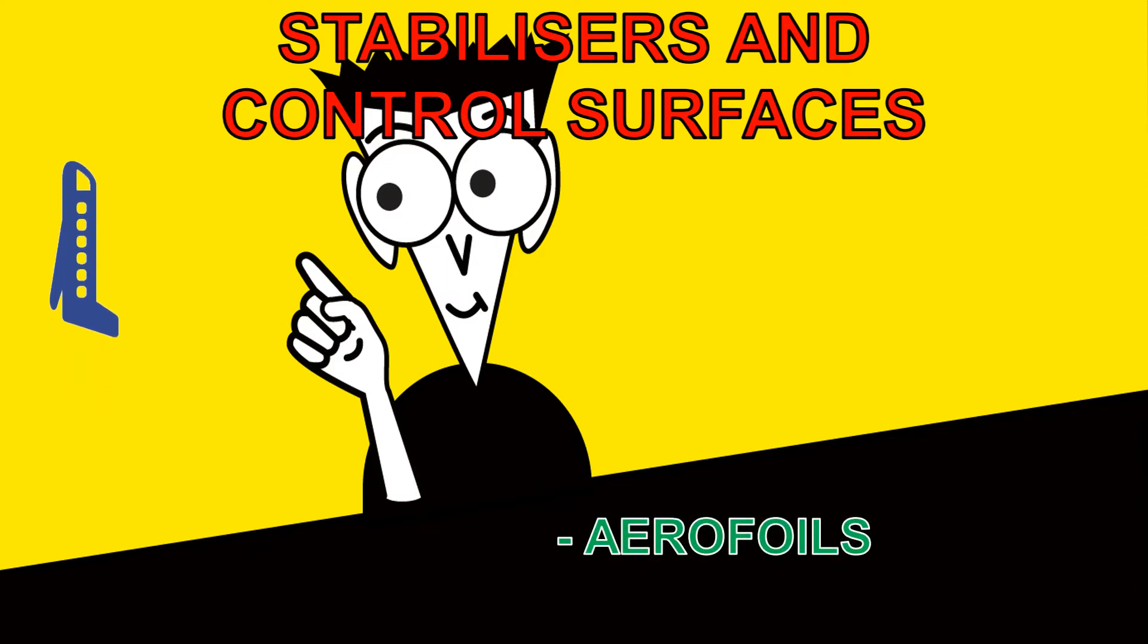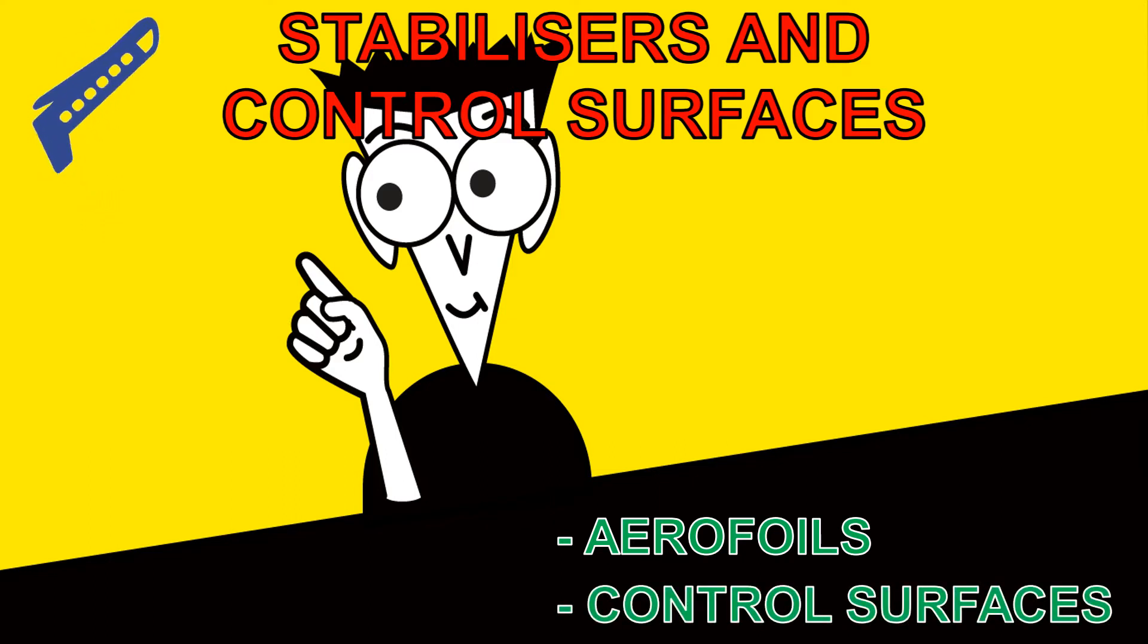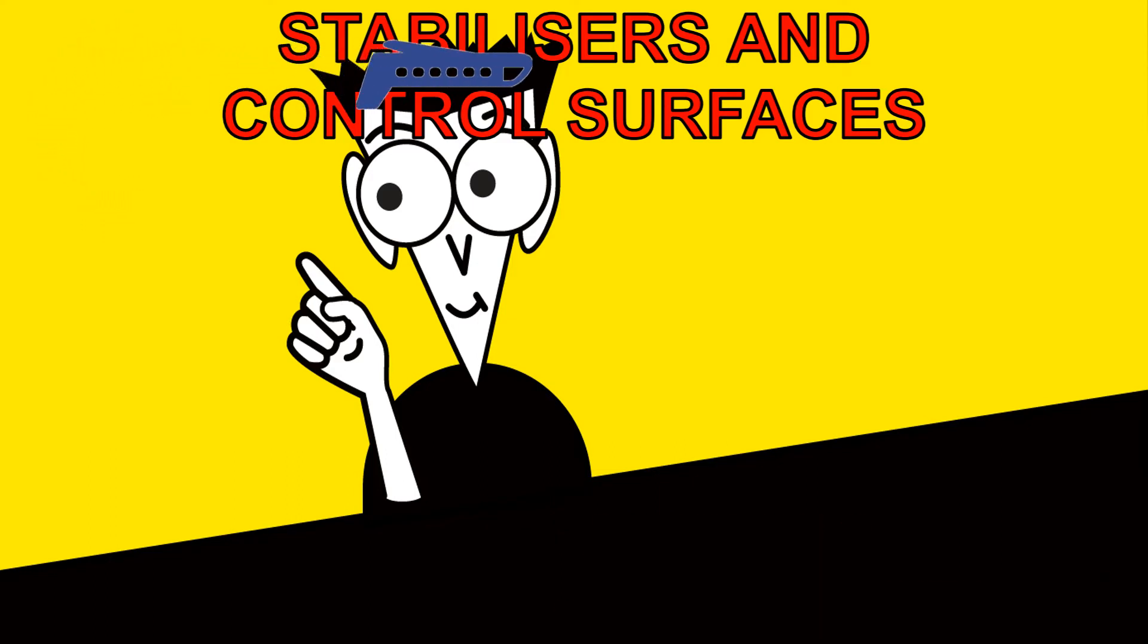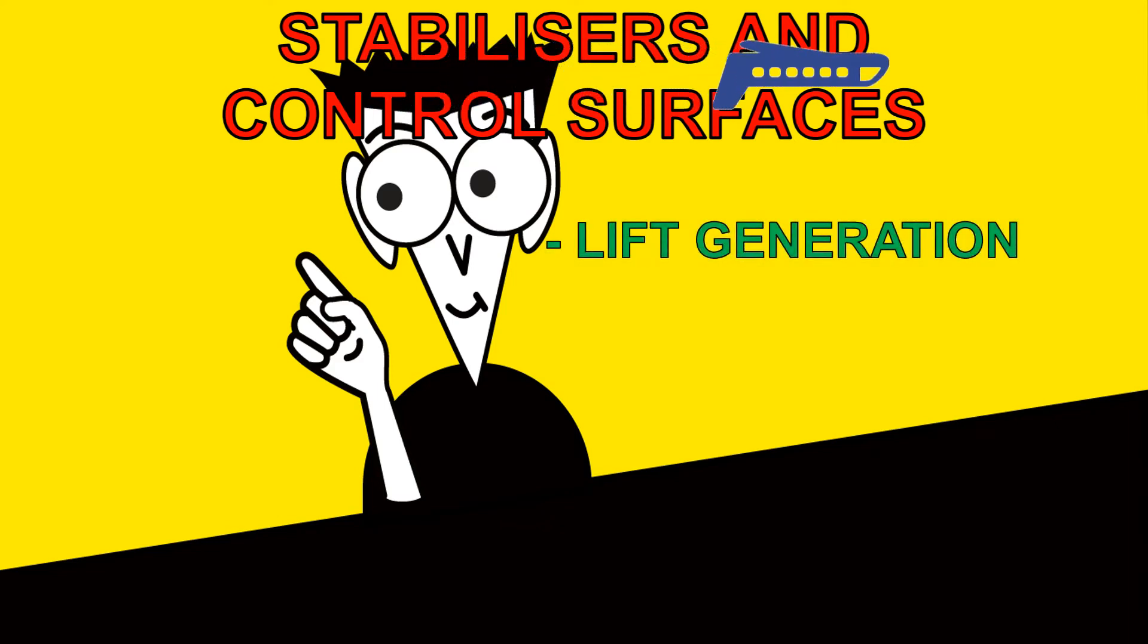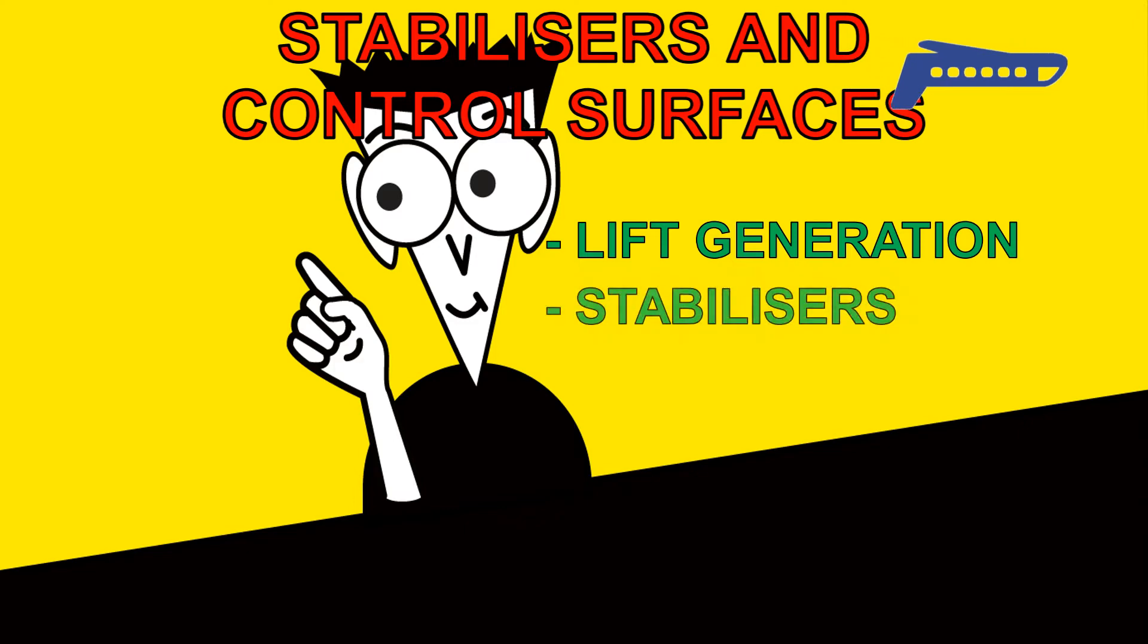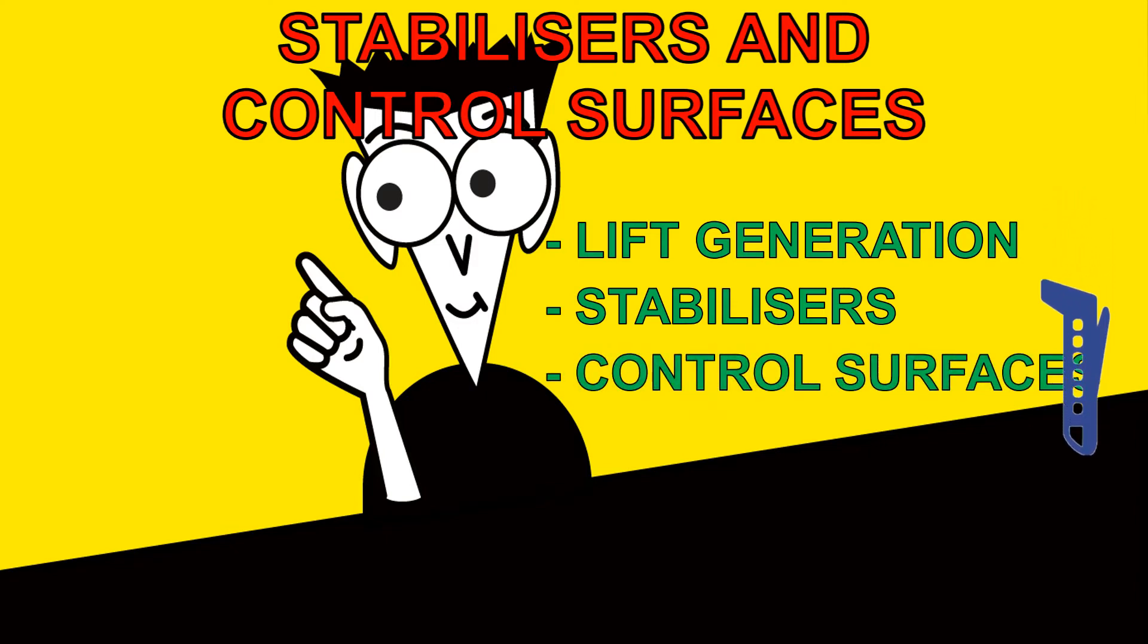This includes aerofoils, such as the tail fin and tail plane, and control surfaces, such as elevators and rudders. In this video we will be looking at the very basic idea of lift generation, how a stabilizer such as a tail plane or tail fin works, and how a control surface works, explained with considerably basic detail.